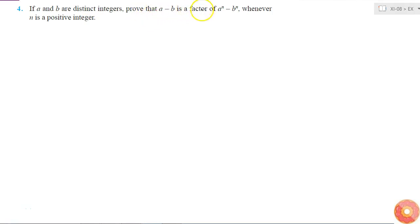Here I have to prove that a-b is a factor of a^n - b^n whenever n is a positive integer, if a and b are distinct integers.